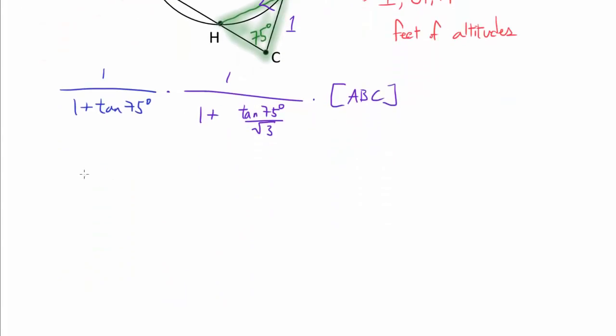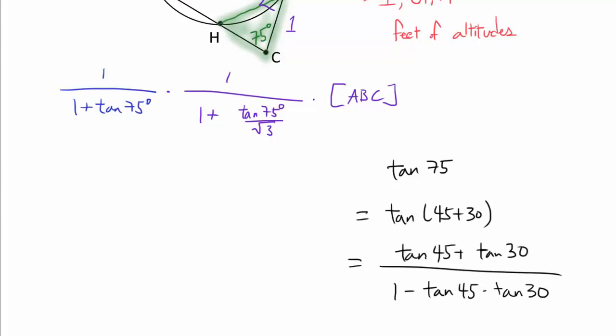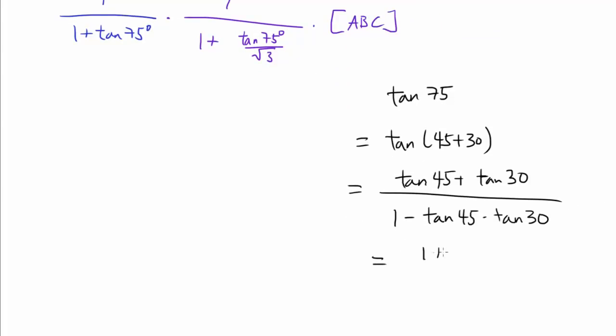So what is tangent of 75? That's tangent of 45 plus 30. And we can apply tangent addition formula. We know tangent of 45 is 1, tangent of 30 is square root of 3 over 3.